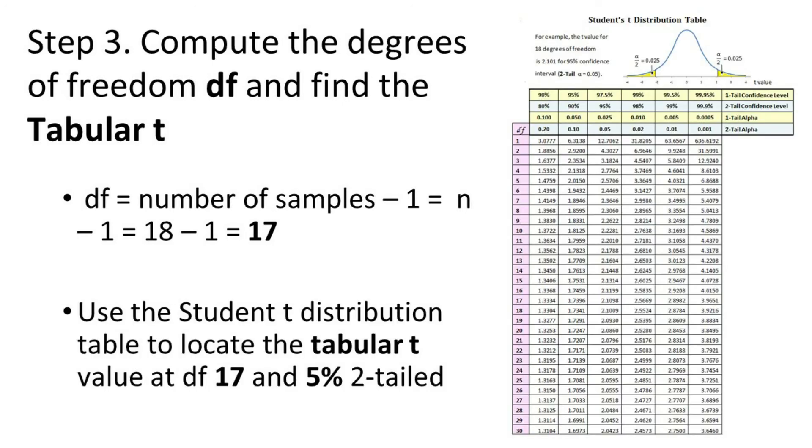Now we shall use the student t distribution table to locate the tabular t value at degrees of freedom 17 and 5% level of significance or 95% confidence. In this case, the tabular value is 2.1098 or shall we say 2.11.